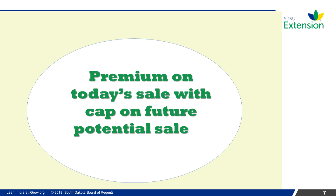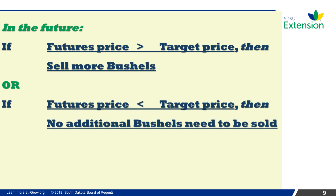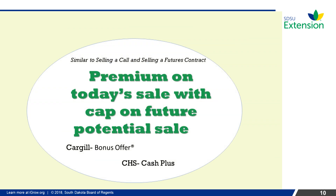Premium contracts typically provide a premium to the futures price being offered today if in the future the producer is willing to sell more bushels if the futures price is higher. Premium contracts usually only commit a set amount of bushels in the future sale, and if the price on a future date is below a target price, then a sale of additional bushels is not required. Premium contracts are similar to selling a call and selling a futures contract.